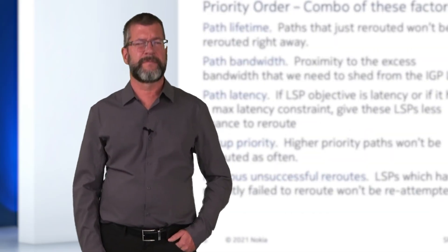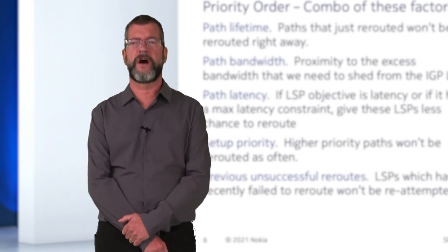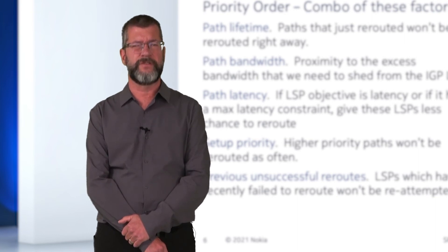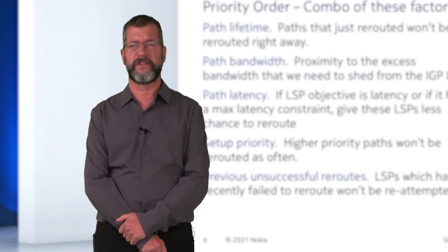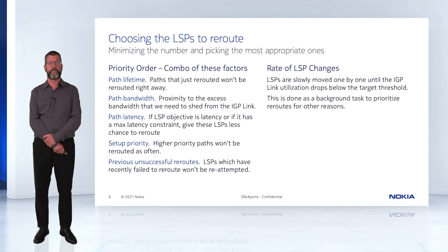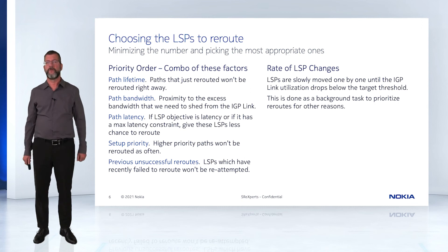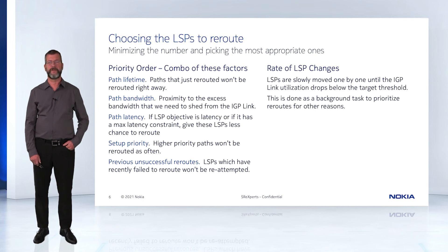The third technique is controlling the priority ordering of LSPs. A weighted combination of factors is used to determine which is the best LSP to pick. Path Lifetime: paths that have just been rerouted won't be preferred for being rerouted right away. Path Bandwidth: proximity to the excess bandwidth — the difference between the current utilization and the target threshold — will make an LSP preferred, making a single LSP the rerouting choice.